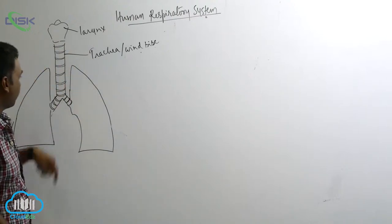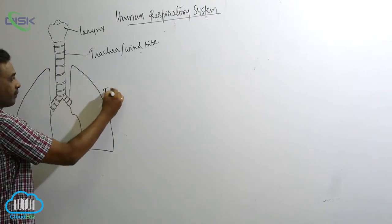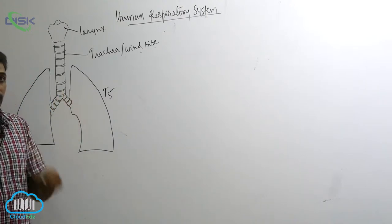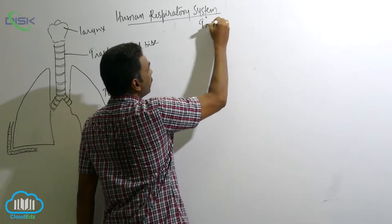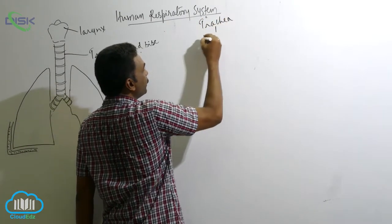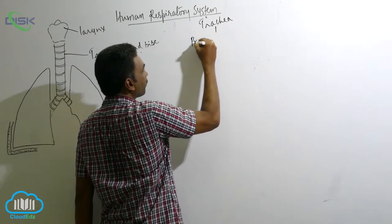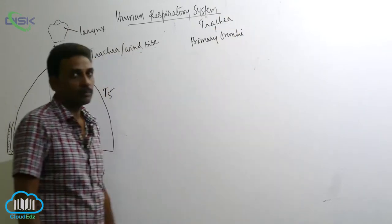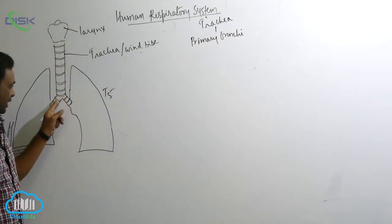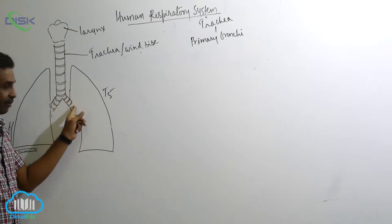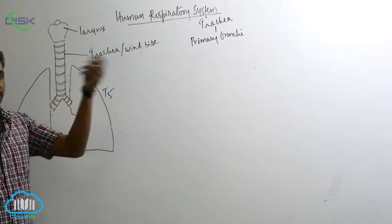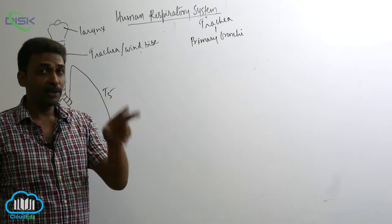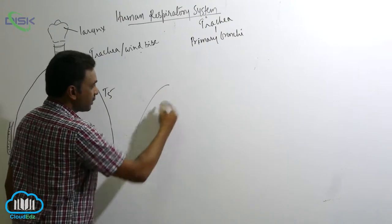The trachea, at the level of T5, divides into two bronchi — the right primary bronchus and the left primary bronchus. Each of the primary bronchi goes to one of the two lungs. There are only two primary bronchi.